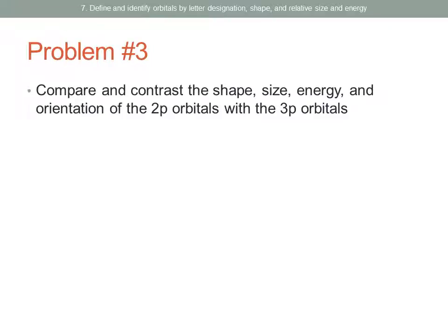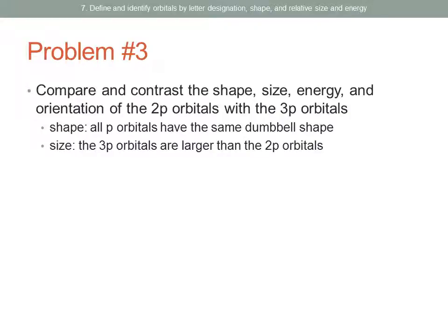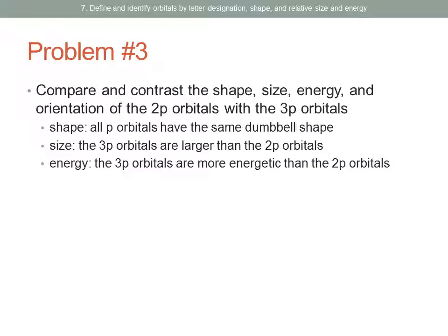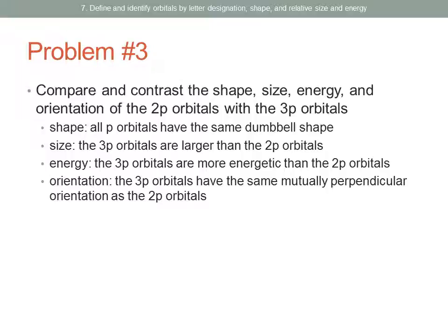The third problem is very similar to the last one. We are asked to compare and contrast the shape, size, energy, and orientation of the 2P orbitals with the 3P orbitals — same sublevel designation but different energy levels. The shape is the same: all P orbitals have that dumbbell shape. The 3P orbitals would be larger than the 2P orbitals because it's a higher energy level. The 3P orbitals are also more energetic, and they have that same mutually perpendicular orientation.